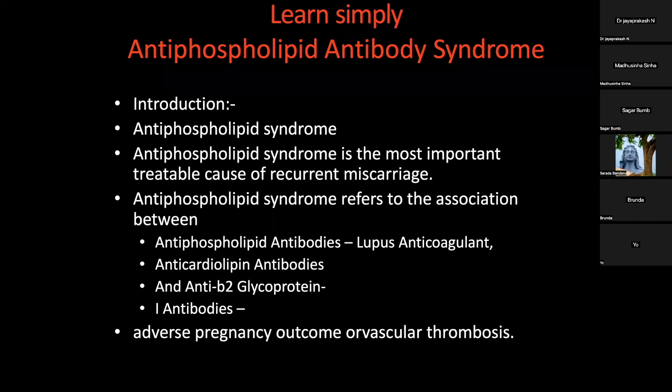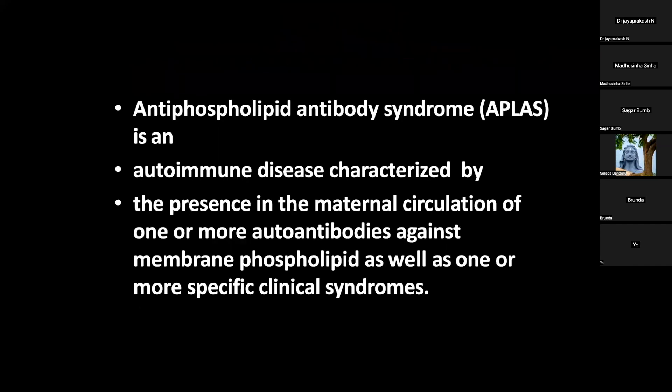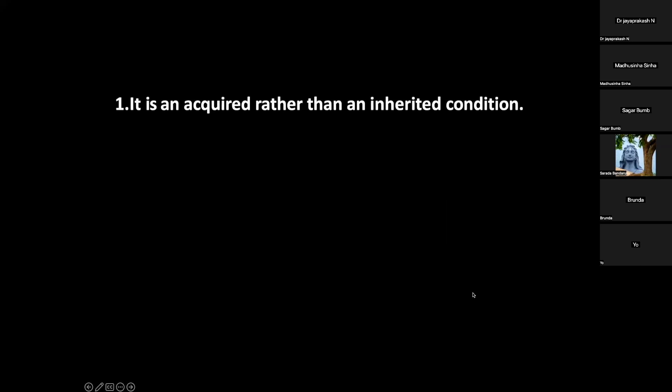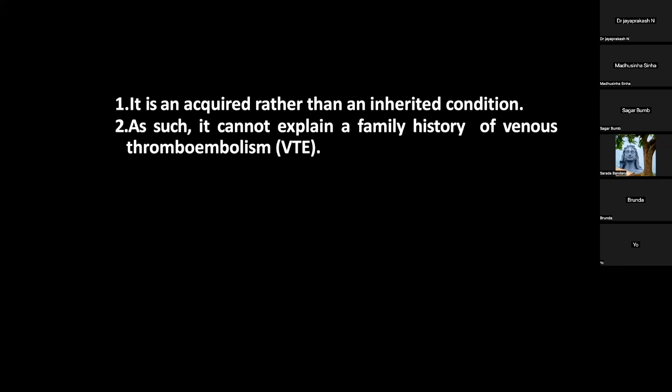Antiphospholipid syndrome is an autoimmune disease characterized by the presence in maternal circulation of one or more antibodies against membrane phospholipids, as well as one or more specific clinical syndromes. It is an acquired rather than inherited condition, and that is why we are able to treat it.